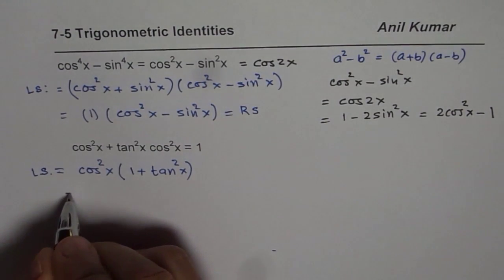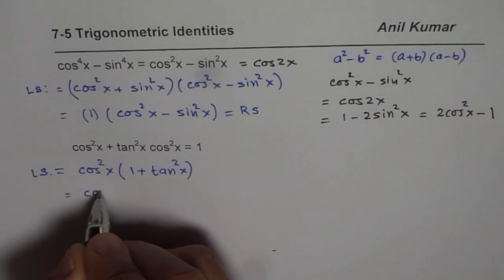Now what is 1 plus tan square x? 1 plus tan square x is secant square x.